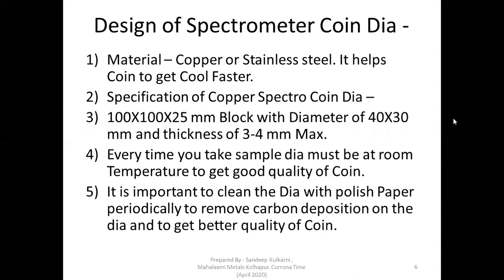Every time you take a sample, the die must be at room temperature — this is very important. If the die is hot, cooling will not occur properly and it will not give you consistent results. It is also important to clean the die with polishing paper periodically to remove carbon deposition on the die and to get better quality coin. The carbon deposition will be removed and you will get a proper quality coin. Good quality coin is very important — unless you get a good quality coin, you will not get consistent results from the spectrometer.